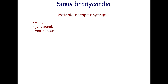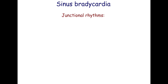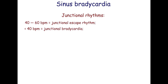Sinus node dysfunction often results in junctional and ventricular escape rhythms. A junctional rhythm with a rate ranging from 40 to 60 beats per minute is called a junctional escape rhythm. If the rate is less than 40 beats per minute, it is called junctional bradycardia.